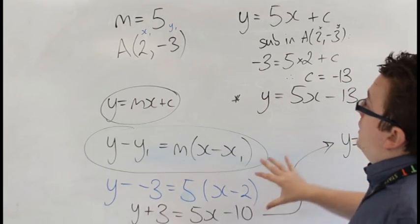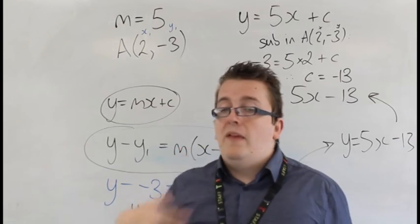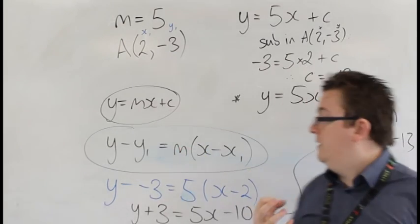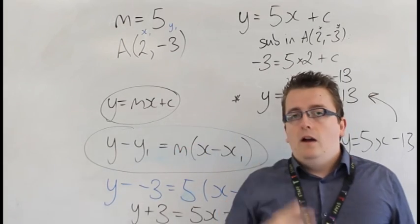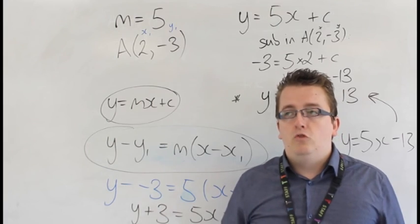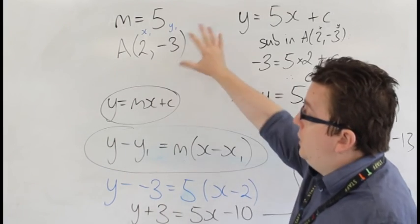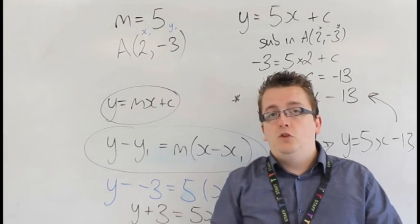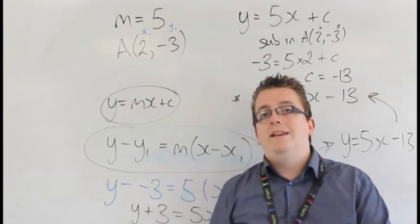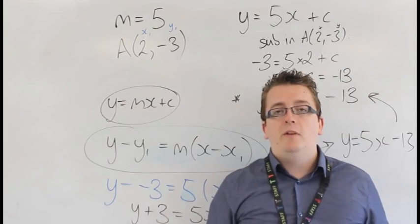So, both of these variations work, but that's how you can determine the equation of a line using the gradient, or by using the gradient and the point, or by having the two points originally, finding the gradient and substituting it into y equals mx plus c.